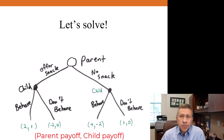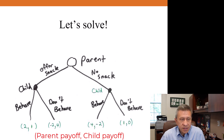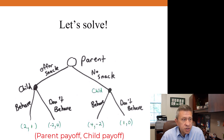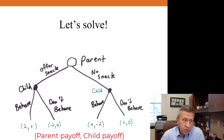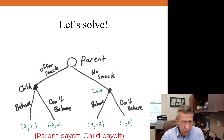What does the child do? If the child is offered a snack, they could behave and get a payoff of one, or not behave and get a payoff of four. Four is better than one, so the child would choose not to behave. And if the parent chooses no snack, the child could behave or not behave. The payoff for not behaving is zero, and the payoff for behaving is negative two. So the child will again choose not to behave.